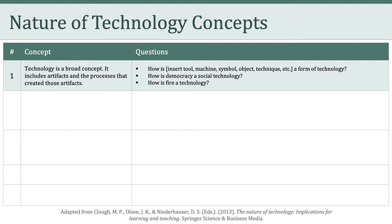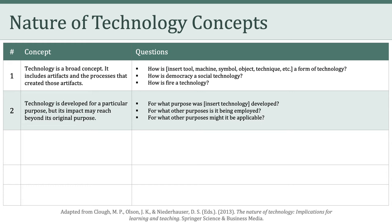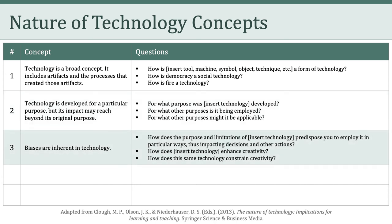You should challenge yourself and ask how any given thing, object, process, or technique is or is not a technology. The second concept is that technology is developed for a particular purpose, but its impact may reach beyond its original purpose — so we ask: for what purpose was a given technology developed, and for what other purposes might it be applicable? The third concept is that biases are inherent in technology. We want to continuously ask how the purpose and limitations of a given technology predispose us to employ it in particular ways, thus impacting decisions and other actions.